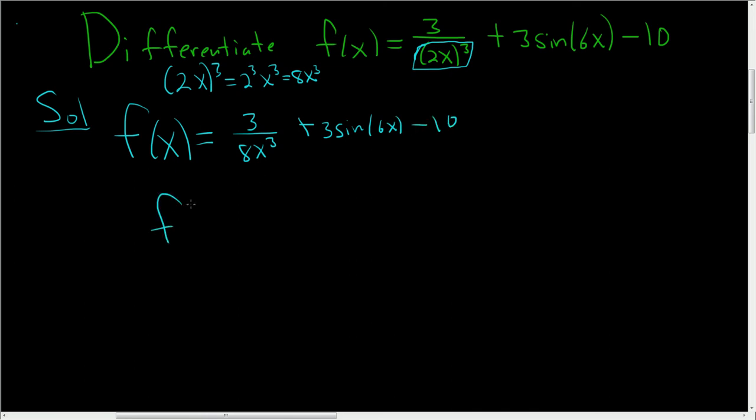Almost where we want to be. This piece here is still a bit of a pain, so we'll bring the x cubed upstairs to make it easier to differentiate. So we have 3/8 x to the negative 3, plus 3 sine 6x, minus 10.